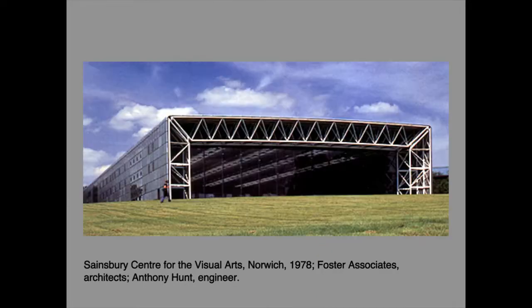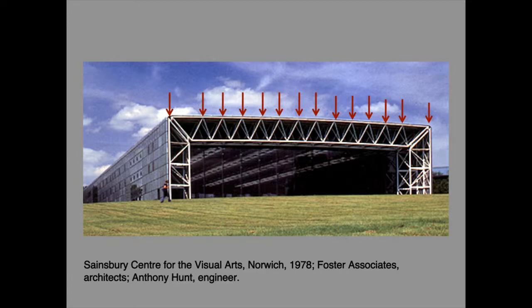Because buildings are about enclosure, which involves horizontal spans, and the loads that occur on buildings are mostly gravitational, which act vertically downwards, the basic scenario of an architectural structure is one that tends to cause bending. As was shown in the presentation 'Form and Internal Force Type', the presence of bending causes structural inefficiency.